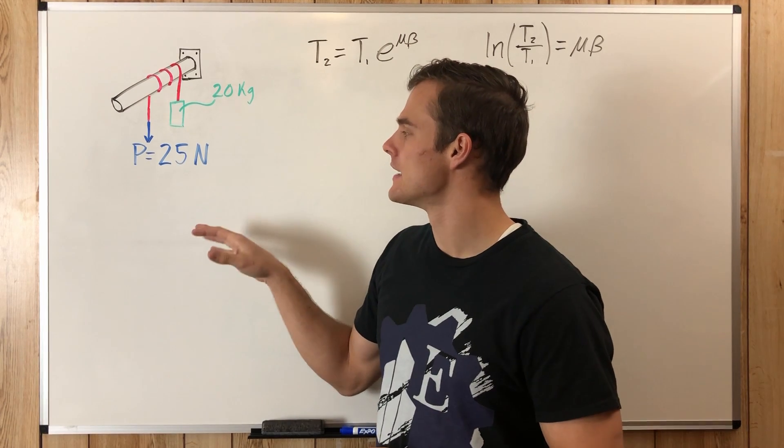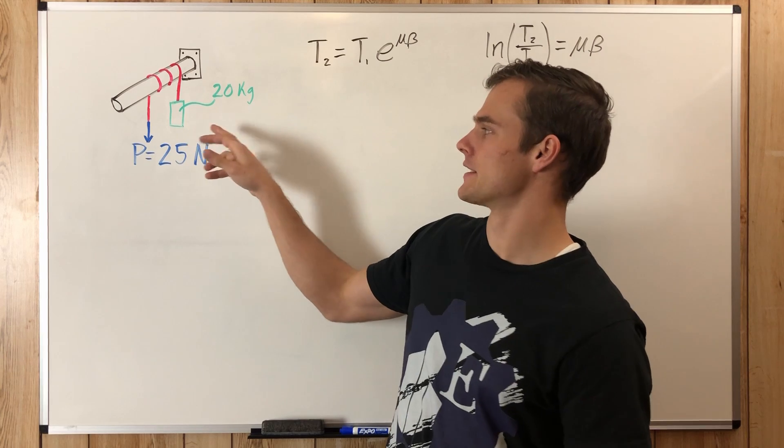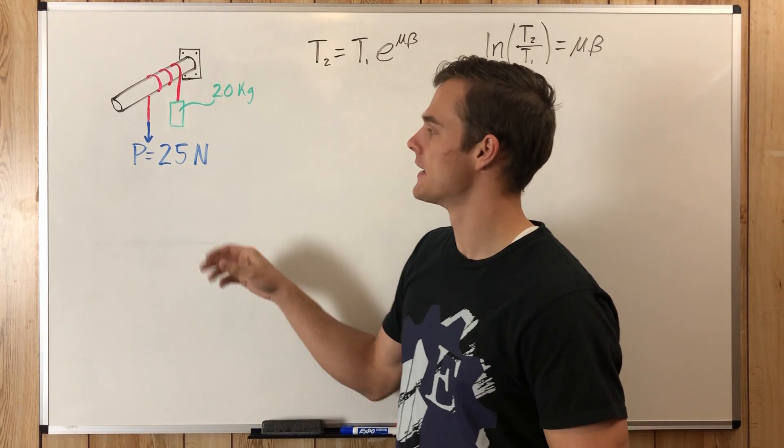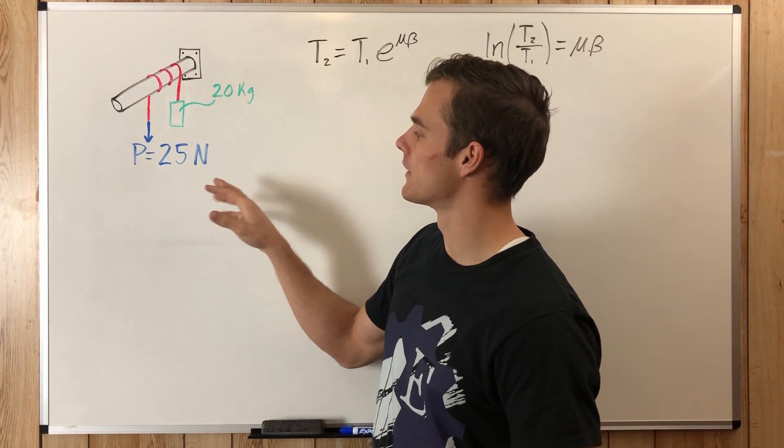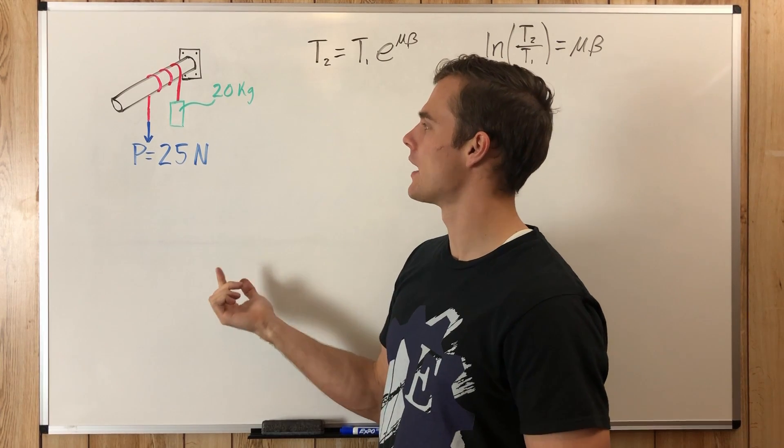Now this force P is the minimum force needed to keep this 20 kilogram weight from starting to move downwards. And what we need to do is we need to find the force P needed to start pulling the weight up.